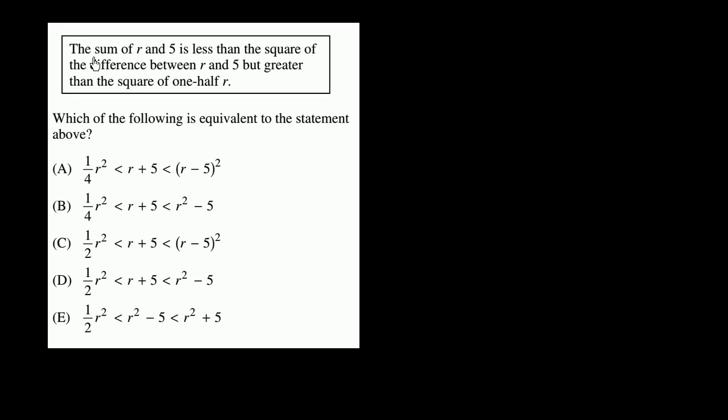The sum of r and 5 is less than the square of the difference between r and 5, but greater than the square of one-half r.